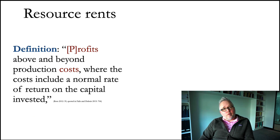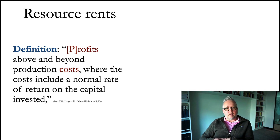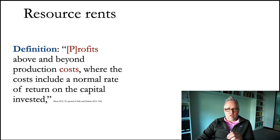So what are resource rents? They are the profits above and beyond production costs, where the costs include a normal rate of return on the capital invested. Resource rents can flow either to private corporations and individuals, or through taxation, lease agreements, or agreements with the government, can flow directly to the government. We're going to look at how these profits above and beyond costs — including a reasonable amount of profit — can have dramatic effects on the stability of political systems, corruption, and the immense individual wealth that can accrue to certain people who control the resources.